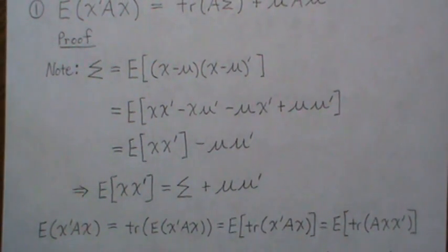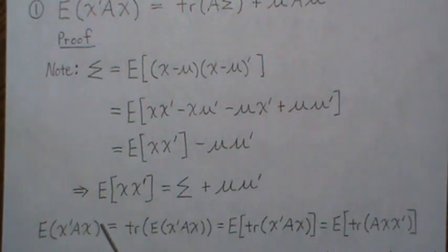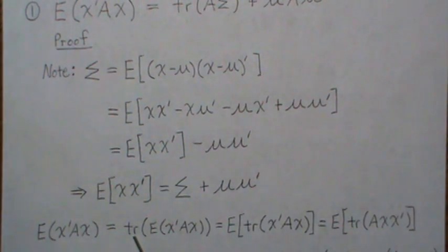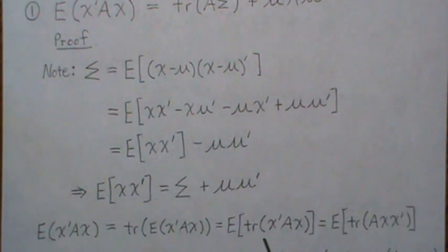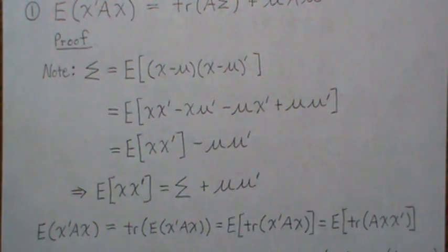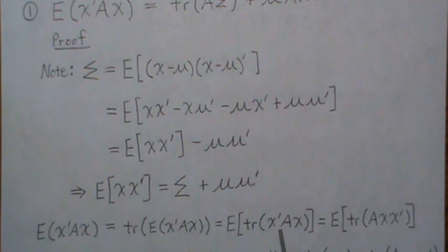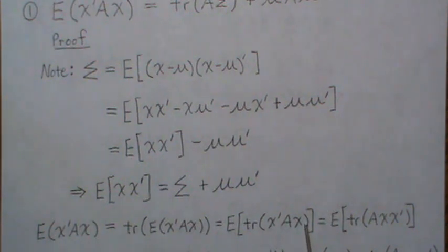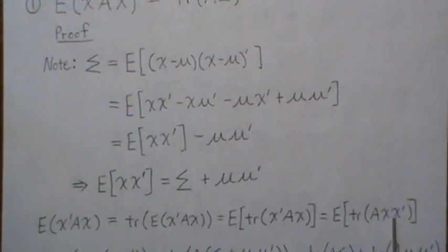Now back to the proof: the expected value of x'Ax. Since this is a scalar, taking the trace doesn't change it, and the trace can be brought through the expectation. One of the nice properties of trace is we can rearrange terms in a way that keeps multiplication valid. So if we take the x and move it to the back, these two quantities are the same.